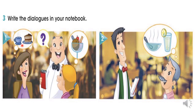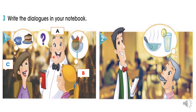Tenemos tres personajes. Uno de los cuales va a ser letter A, letter B, and letter C. Tenemos al personaje que va a ser la letra A, al personaje la letra B, y al personaje la letra C. Entonces, al costado voy a dar el ejemplo del diálogo.